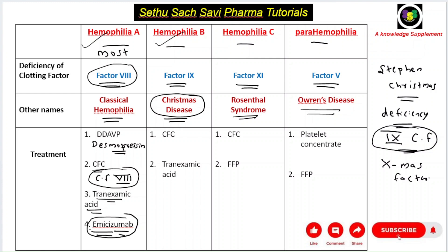For Hemophilia B (Christmas disease), the best choice is to give clotting factor 9 concentrate, since Hemophilia B is due to deficiency of factor 9. The anti-fibrinolytic drug tranexamic acid can also be given.